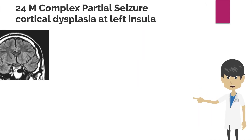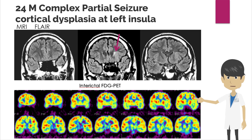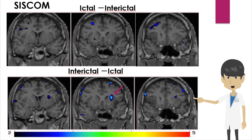SISCOM analysis usually aims to detect increased perfusion in the epileptic focus during seizures. However, if the seizures are short, the brain may already be in a postictal phase when the brain perfusion tracer reaches the brain. In this case, the perfusion in the epileptic focus may be lower than in the interictal phase. In this case of epilepsy with complex partial seizures, the MRI FLAIR shows a high signal bordering the slightly thickened left insular cortex, and focal cortical dysplasia in the left insular cortex is suspected. FDG PET does not show any abnormalities. In SISCOM analysis, subtraction of the ictal SPECT from the interictal SPECT shows decreased perfusion in the ictal phase in the left insular cortex adjacent to the high signal area seen on MRI. Thus, evaluating not only the increase but also the decrease in perfusion is useful for focus detection.